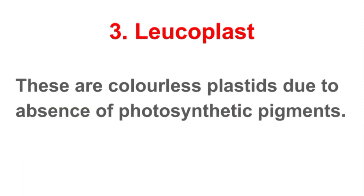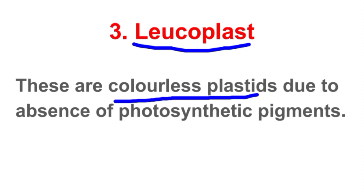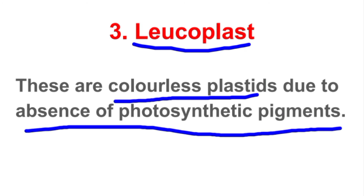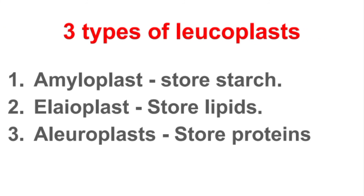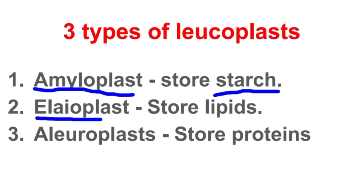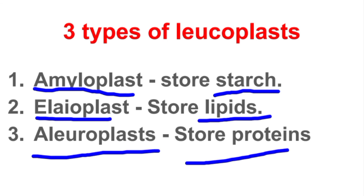The last type of plastids is called leucoplasts. Leucoplasts are colourless plastids because photosynthetic pigments are absent. They store food and are of three types. Leucoplasts that store starch are called amyloplasts. Elaioplasts store lipids. Aleuroplasts are leucoplasts which store proteins.